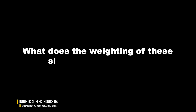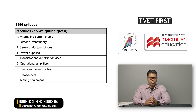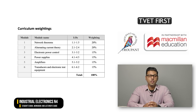What does the weighting of these six modules look like? No weighting was given in the old syllabus and the content was previously divided into nine modules. In the new syllabus, the content is structured into six modules and the table on your screen lists the weighting of each module.